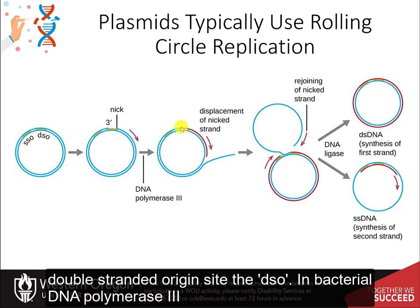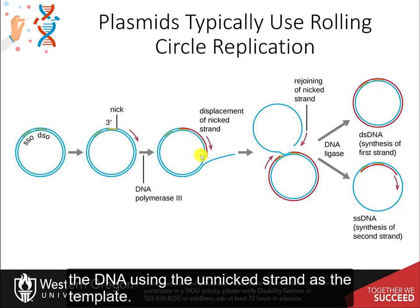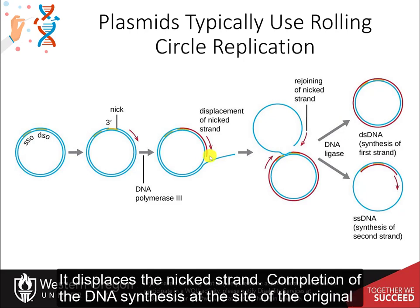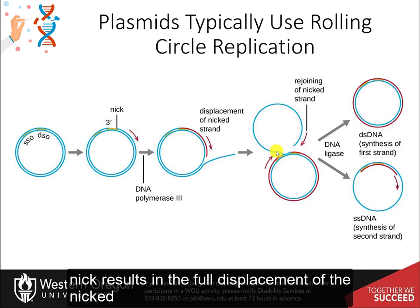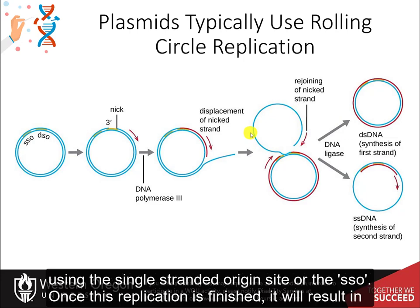In bacteria, DNA polymerase III binds to the 3' hydroxyl of the nicked strand and begins to unidirectionally replicate the DNA using the unnicked strand as the template. It displaces the nicked strand. Completion of the DNA synthesis at the site of the original nick results in the full displacement of the nicked strand and leads to the synthesis of the nicked strand using the single-stranded origin site.